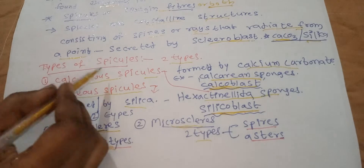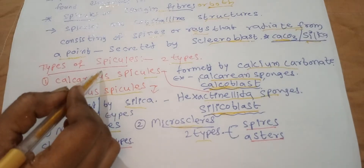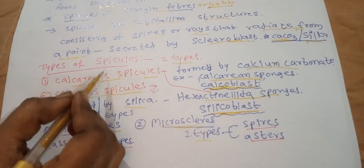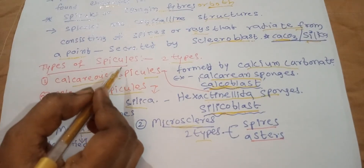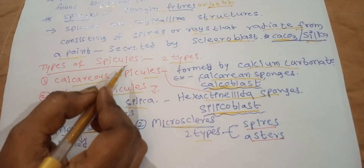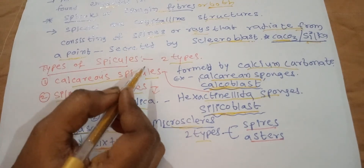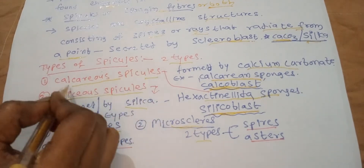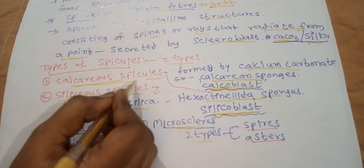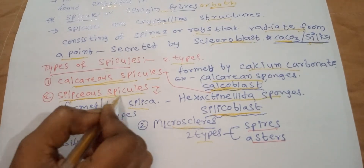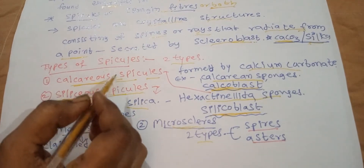Types of spicules: According to the nature of the products, spicules are classified into two types — calcareous spicules and siliceous spicules.